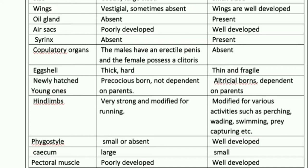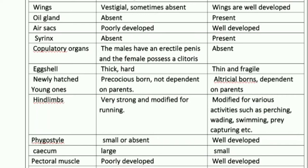Syrinx, which is the voice box, is absent in Ratitae and present in Carinate. You can observe that when an ostrich makes a sound it is not very pleasant — that is because the syrinx is absent. Coming to copulatory organs — the organs used during copulation or sexual intercourse — in Ratitae males have an erectile penis and females possess a clitoris.